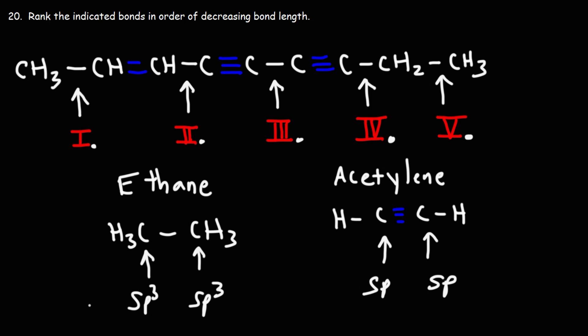Now, how much s character is in an sp3 hybrid orbital? So to make an sp3 hybrid orbital, we've combined one s orbital with three p orbitals. So we have one s out of a total of four orbitals. One out of four is 0.25 or 25%. So an sp3 hybrid orbital has 25% s character. And it's 75% p.